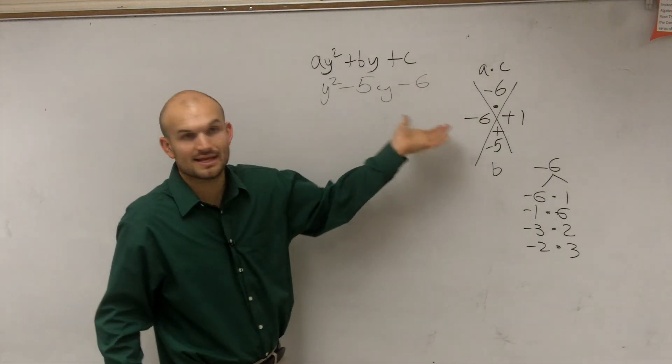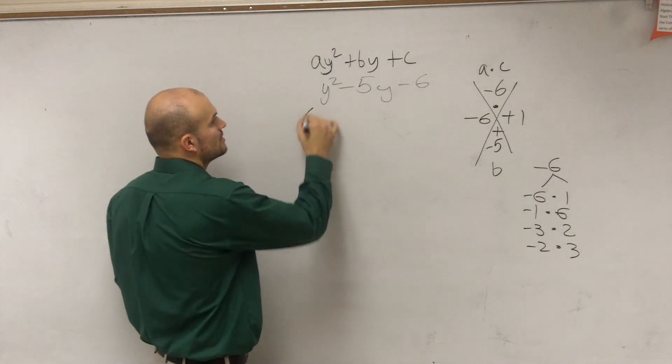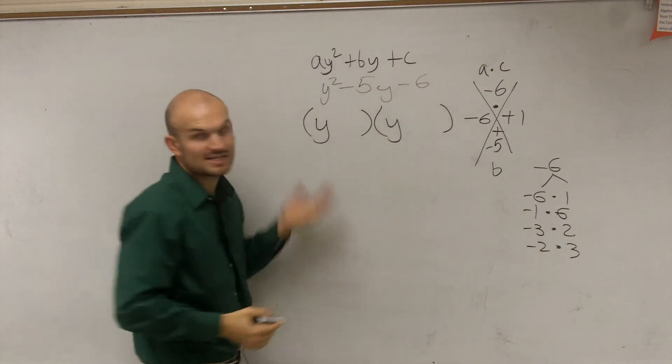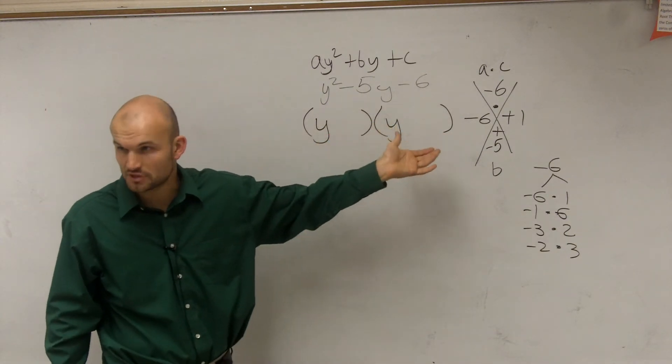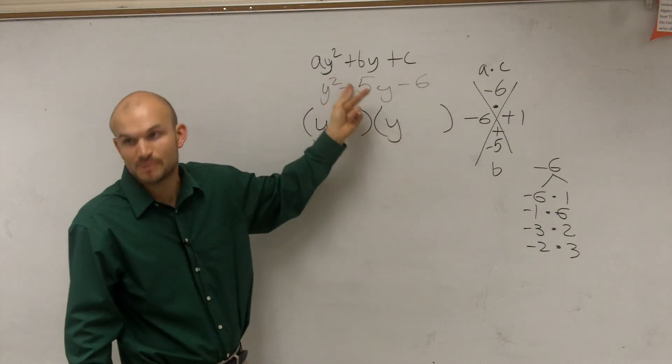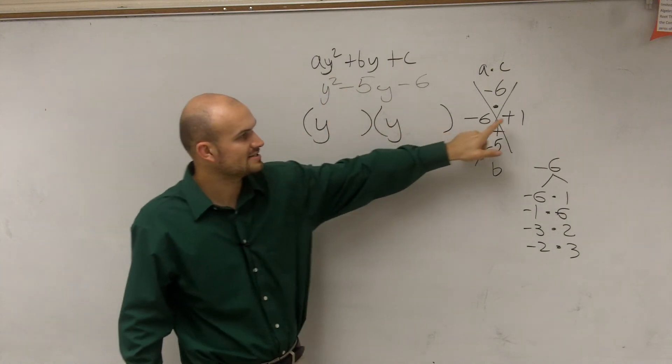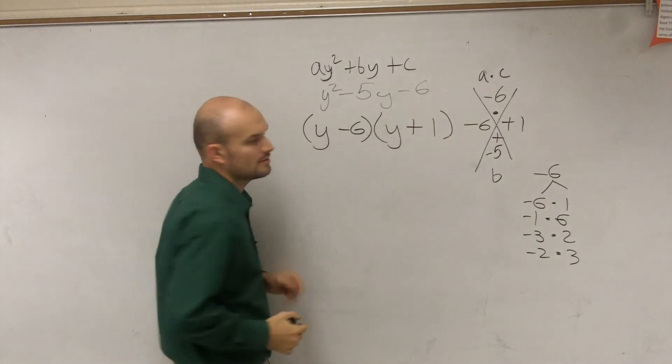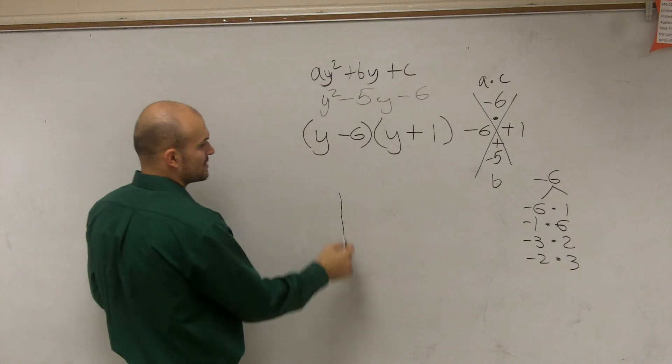Now let's write that in there as our binomials. So I have y and y. I know it has to be y and y because if I was going to do my FOIL technique, I'd know y times y gives me y squared. Then I just take my other two terms here and I have negative 6 plus 1. And I can always check my answer.